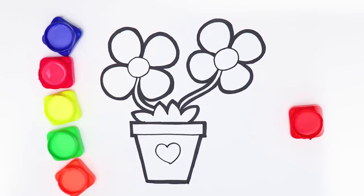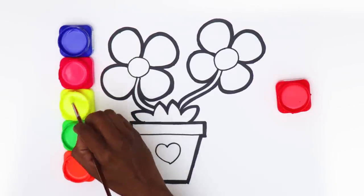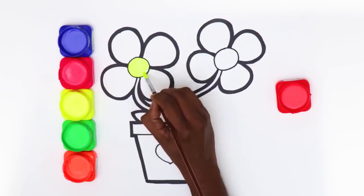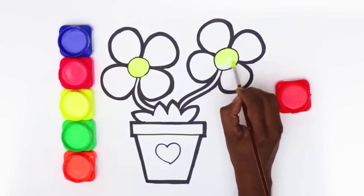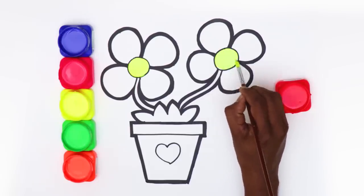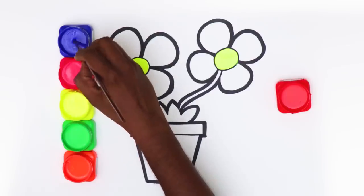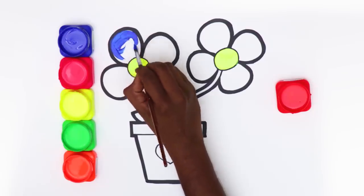Time for the fun part. Let's paint it. I love to paint, don't you? Start with painting the circles yellow. Wouldn't our flowers look beautiful with blue petals? Let's paint the petals.